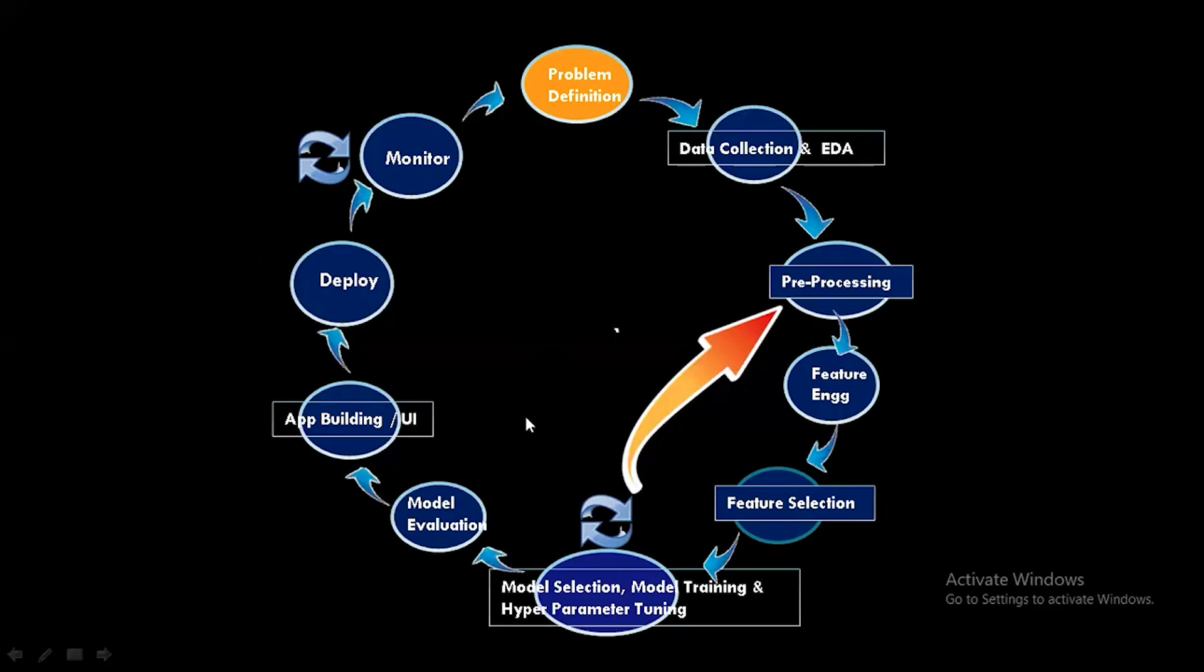Once you find the best algorithm or the best machine learning model, the next stage is you need to deploy it in the production system. So you deploy the model to make real-time predictions. In this case, the model runs daily to update your churn predictions. You integrate this with your CRM to trigger personalized offers. Basically, the deployment ensures our model moves from experiment to impact.